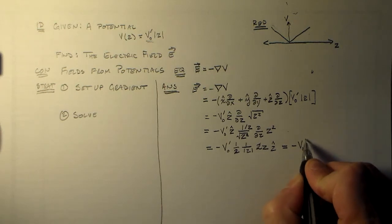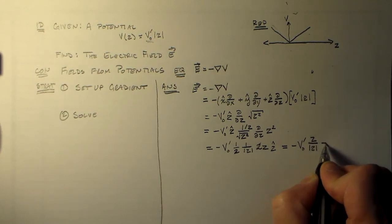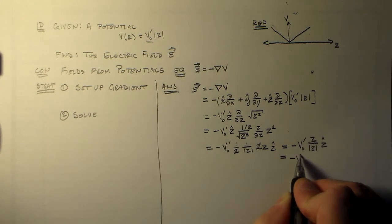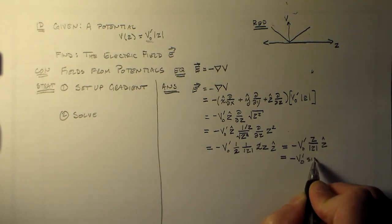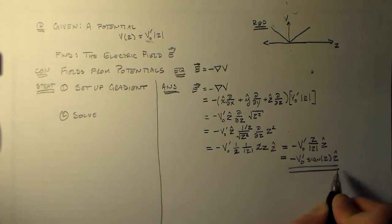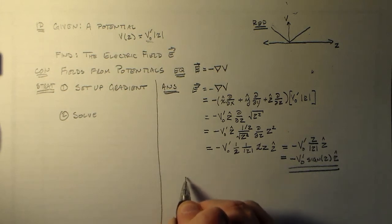That gives us our answer, which is minus V naught prime times the absolute value of Z over Z in the Z-hat direction, which we probably said somewhere before is just the sign of Z, again in the Z-hat direction.